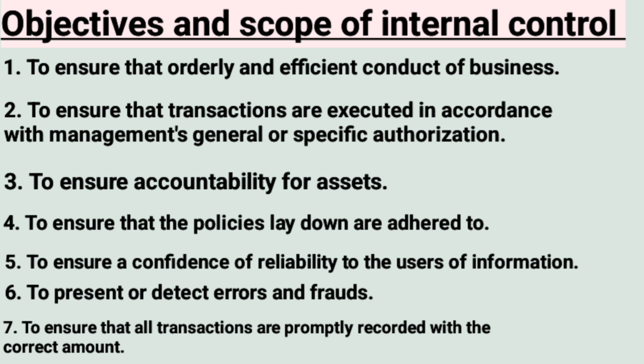So these are the seven objectives and scope of internal control: orderly and efficient business conduct, transactions per management authorization, accountability, adherence to policies, reliability and answerability, fraud and error detection, and ensuring all transactions are properly and correctly recorded.